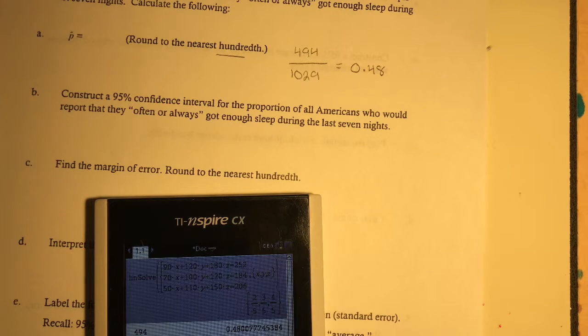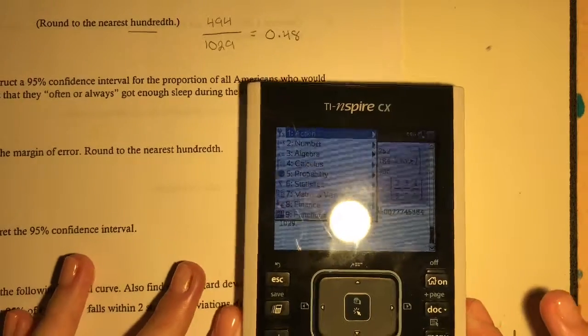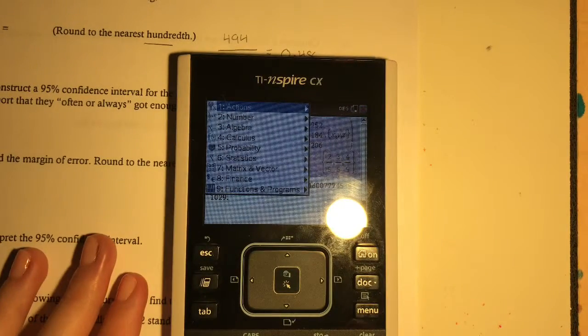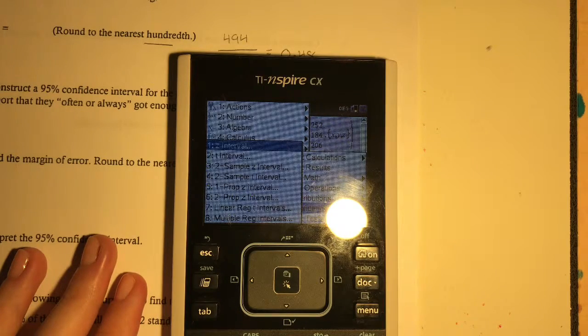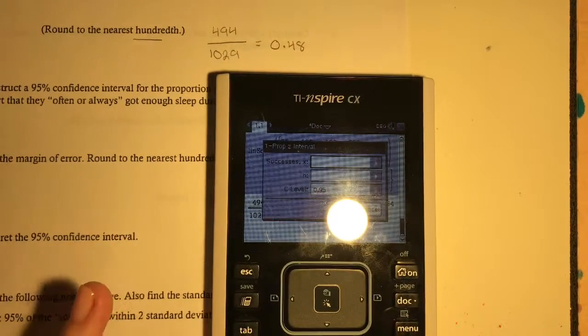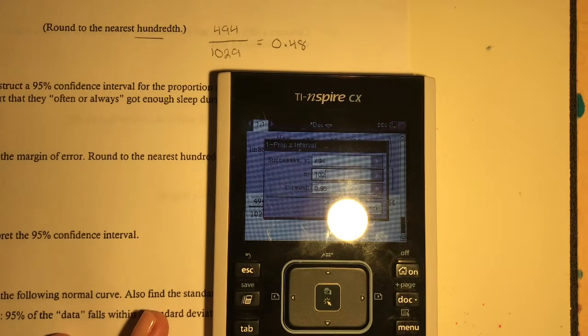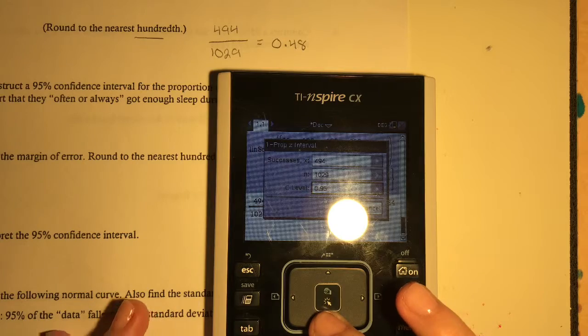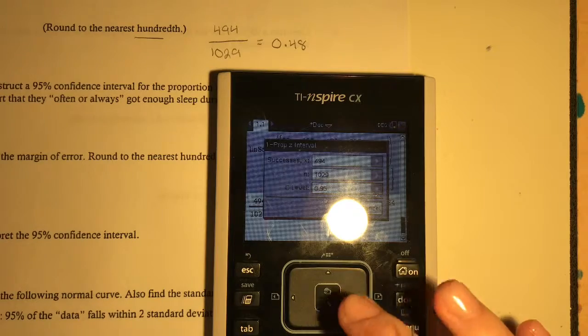Next, we're going to construct a 95% confidence interval for the proportion of all Americans who would report that they often or always got enough sleep during the last seven nights. So go to your TI-Nspire, select Menu, sorry for the glare guys, and then go to Stats, 6, and then go to 6 confidence intervals. Then you're going to select 5, 1 Prop C interval. And the successes, we're going to use that as our 494 over our total, which is N number, 1029. And we're always going to have it at two standard deviations because it said construct a 95% confidence interval. And you're going to select OK.